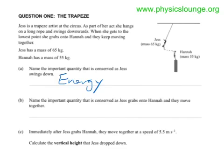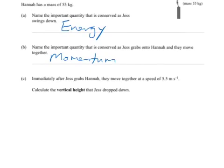The important quantity that is conserved as Jess grabs onto Hannah and they move together is momentum.